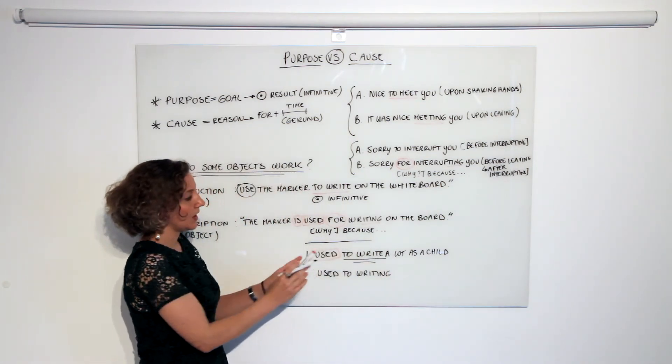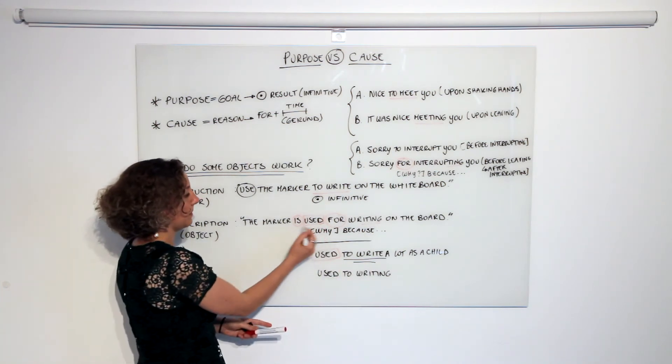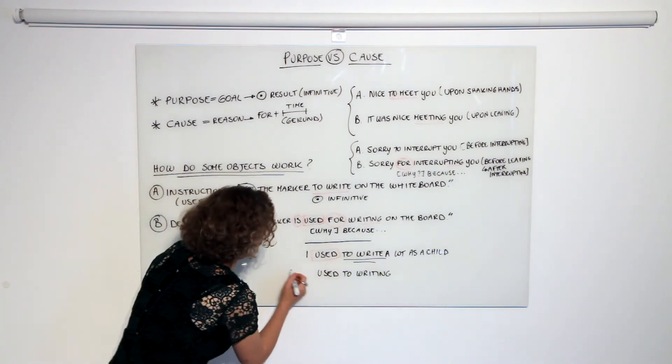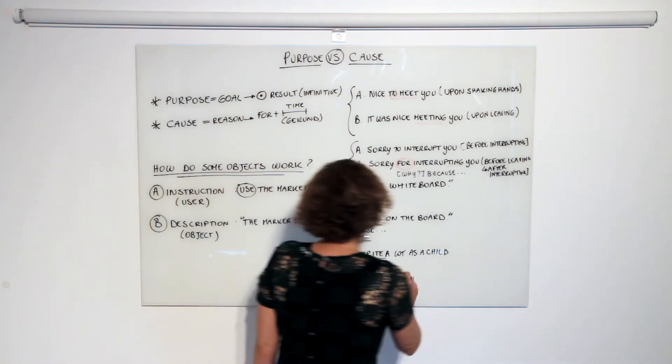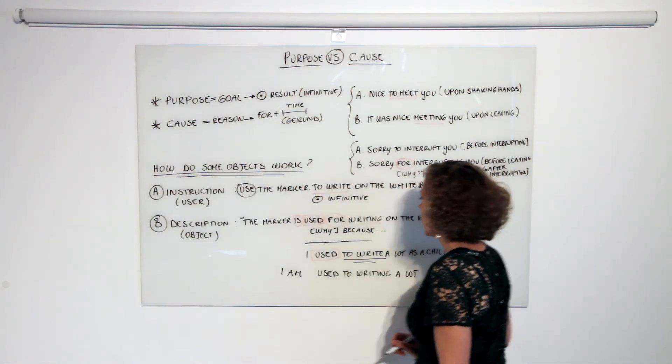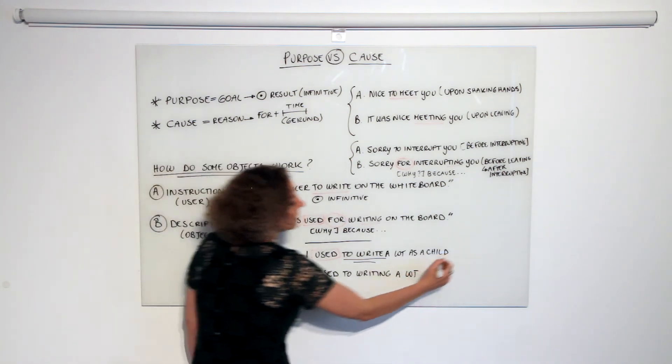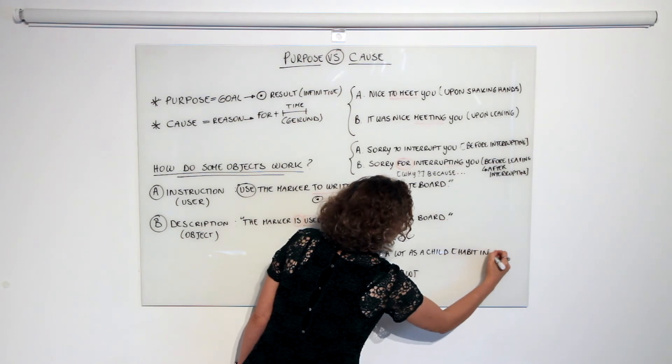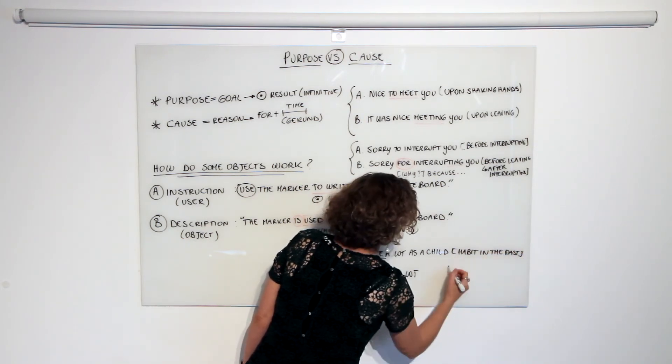So this expresses a past habit and it has nothing to do with this passive form. 'I am used to writing a lot' is yet a different form which expresses not the habit in the past but the habit in the present.